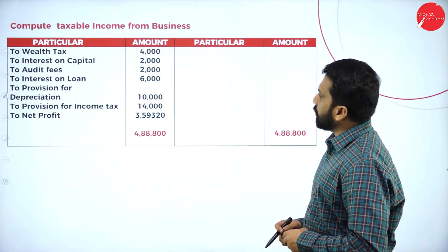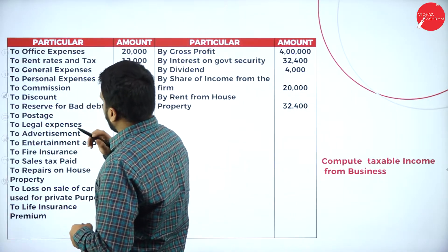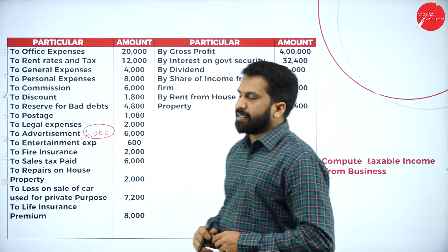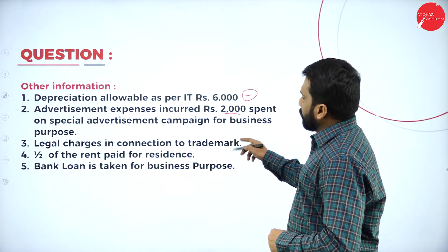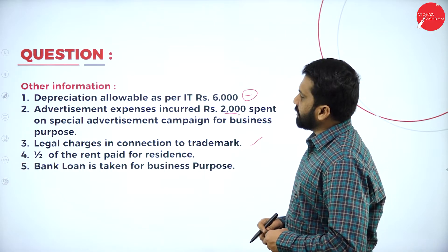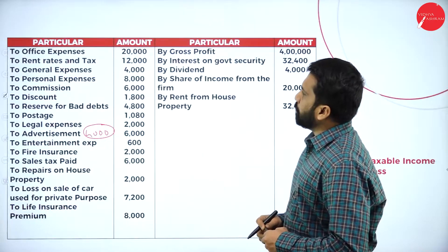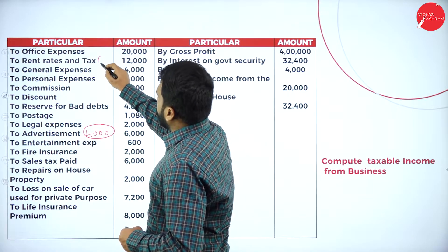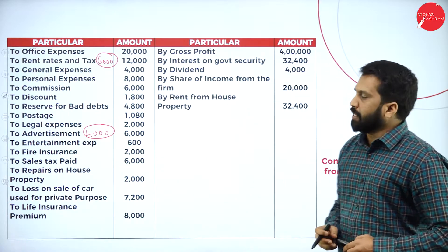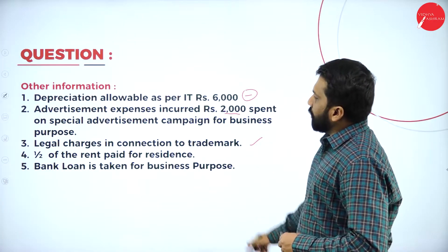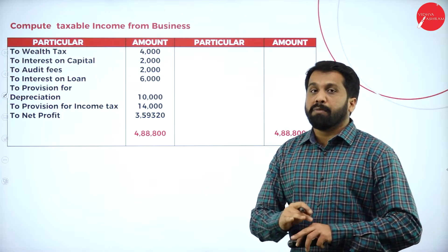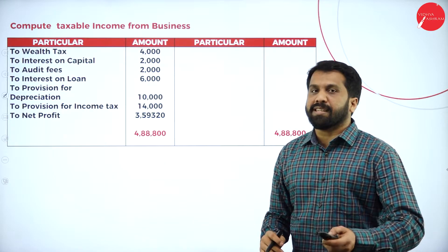You have to remember that — your advertisement of 4,000 is not part of business. Then, legal charges in connection to trademarks — that is a business purpose. Half of the rent paid for residence: how much rent was paid? Rent, rates and tax — only 6,000 is personal and 6,000 is for business purpose. After this, we have a bank loan taken for business, so whatever interest paid on that bank loan, we will not consider, because that is business, not personal.